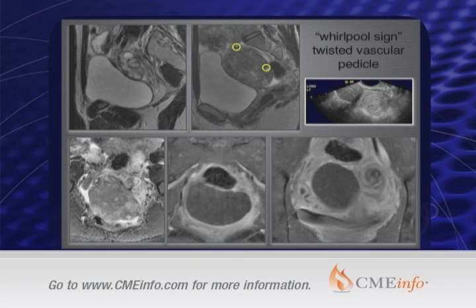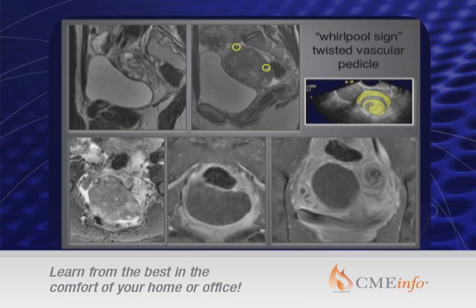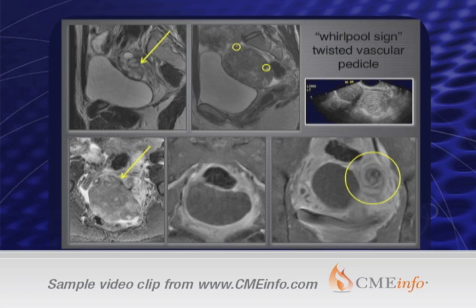The MRI findings are very similar to ultrasound: one enlarged ovary with follicles pushed to the periphery. Here I have put up a comparison showing the whirlpool sign, which is actually much better seen on MRI and well reported in the literature. You can see the twisting of the pedicle very well on these coronal images. It also helps you visualize the normal contralateral ovary and demonstrates absolutely no perfusion of the affected ovary on post-contrast images.